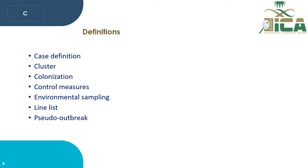Control measures are defined as various actions arranged in order to interfere with and reduce or eliminate the occurrence of a communicable disease or infection. Measures may include patient isolation, enhancing cleaning and disinfection, enhancing hand hygiene, and staff education.